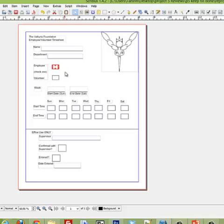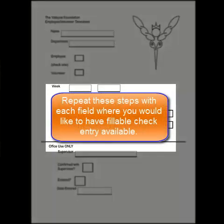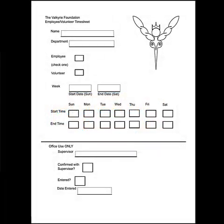And it's as easy as that. Again, repeat these steps for each of your desired check box areas. For the Valkyrie example, this is the result. Notice again that the fillable check boxes created are highlighted for you to see easily.